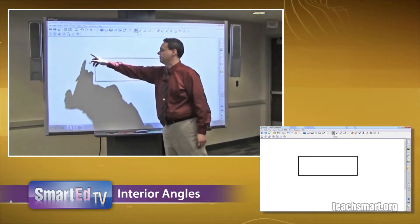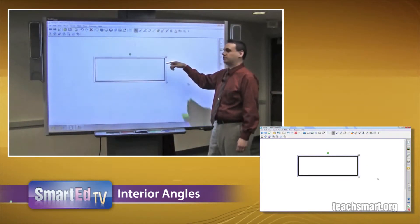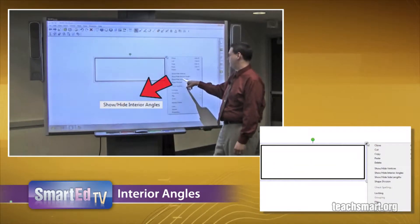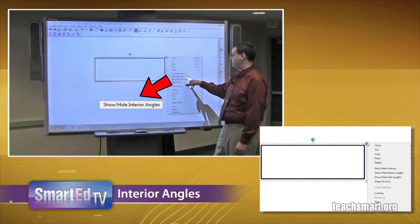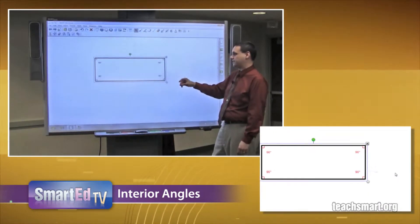Choose my select tool, my notebook toolbar. Now I'm going to select my object which happens to be my shape and I'm going to use my drop-down options menu which is in the upper right hand corner. I'm going to come down here to show or hide interior angles. So I'm going to show my interior angles and as soon as I choose that, this is what we see.